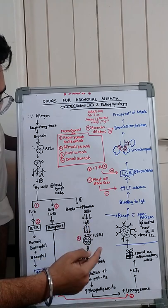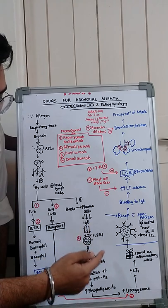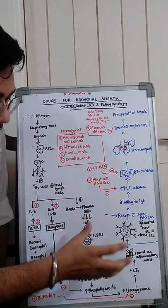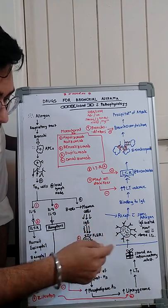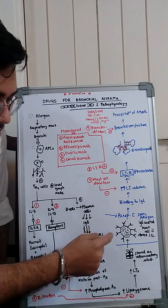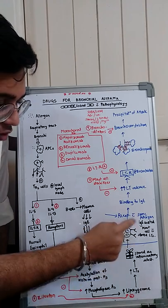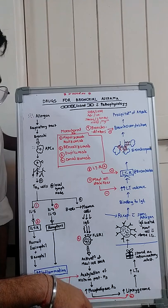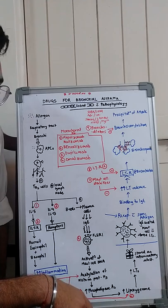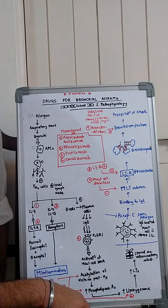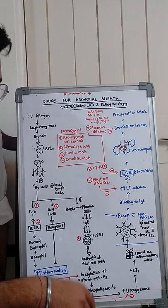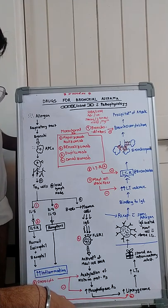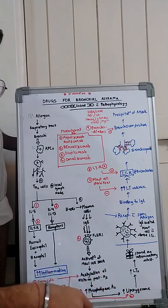The IgE antibody coats the surface of the mast cell, creating IgE-coated mast cells with stored leukotrienes inside. The first exposure causes only minor inflammation, but the real problem arises on re-exposure with the same allergen.